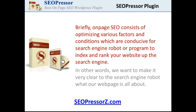On-page SEO basically means you optimize the various factors or parameters on the post or webpage so that it's conducive for a search engine robot — which is basically a program — to know what to index and to get your page ready for ranking. In other words, you want to make it clear to the search engine robot what your post or webpage is all about.